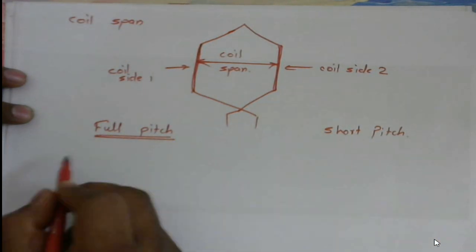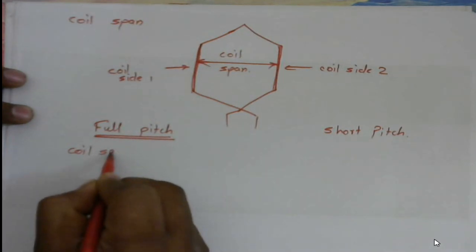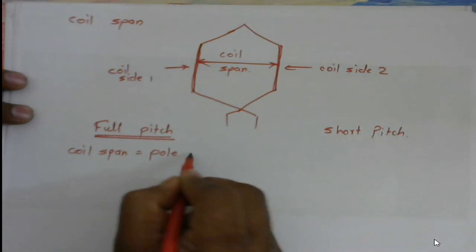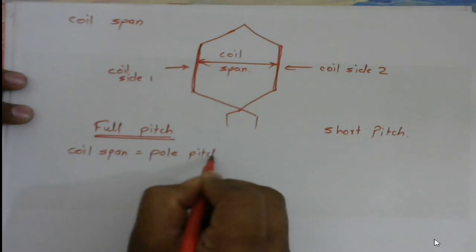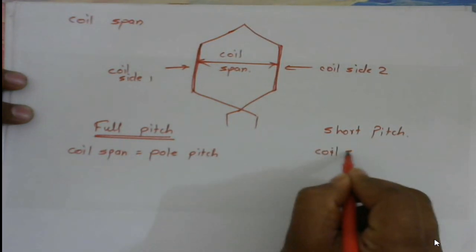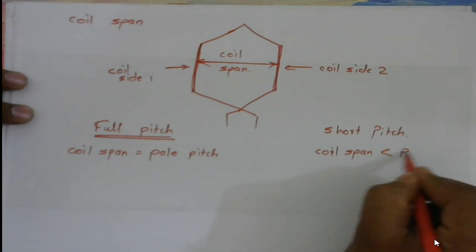So in case of full pitch winding, this coil span is equal to the pole pitch, that is one pole pitch. And in case of short pitch, coil span is less than one pole pitch.